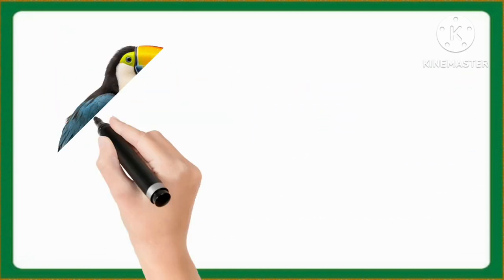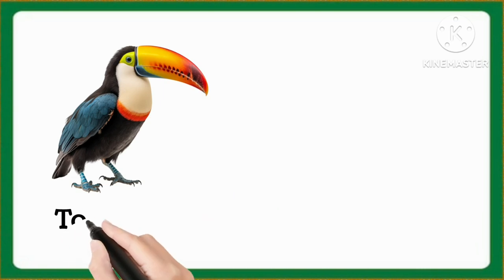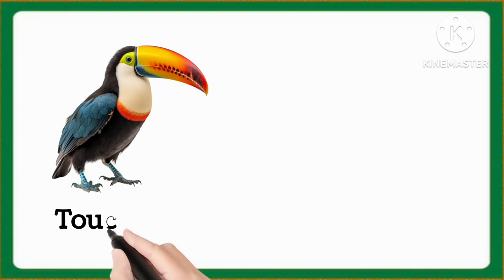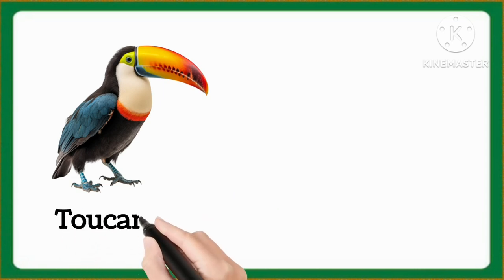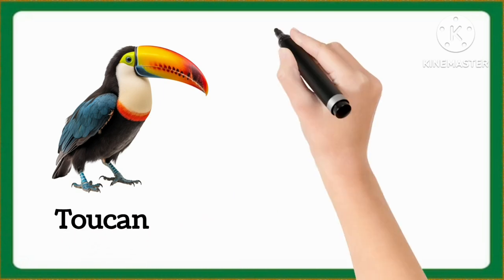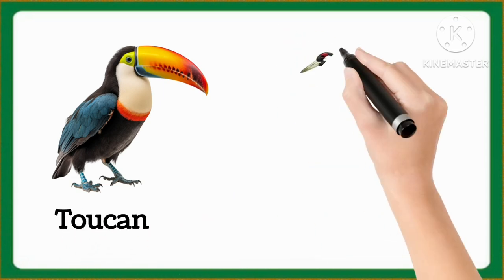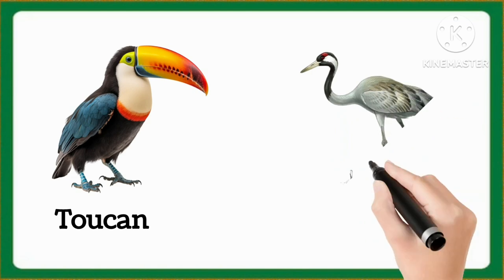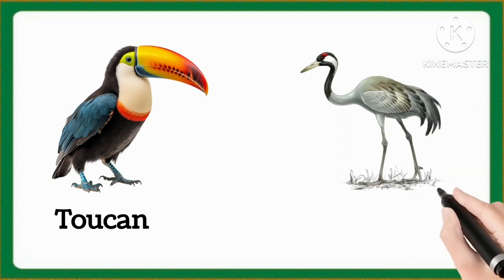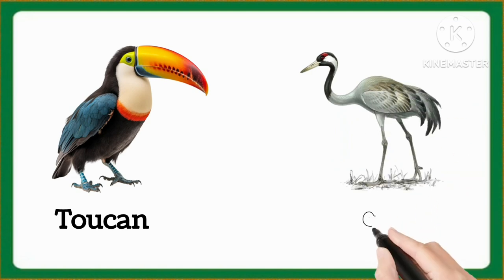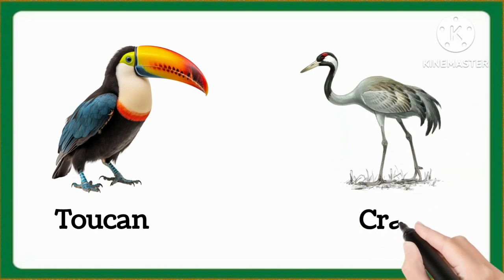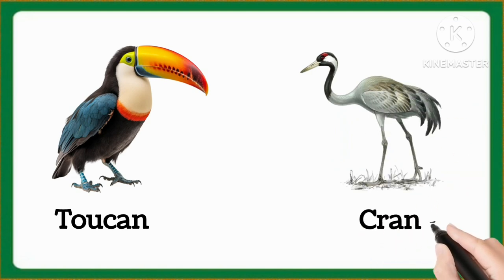And which word is this, kids? This is toucan. And which word is this, kids? This is crane.